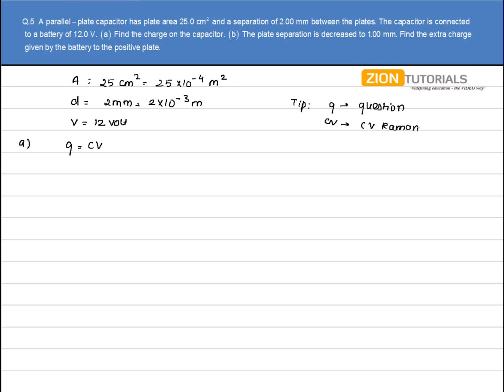As Professor CV Raman is a great scientist, he should know all the questions. So if there's a question, the solution is CV Raman. This is the way to remember: Q = CV Raman.